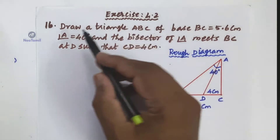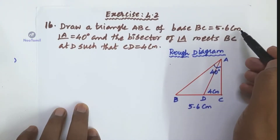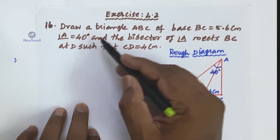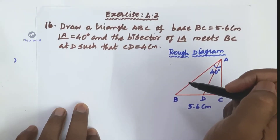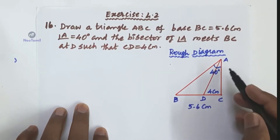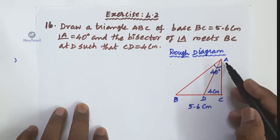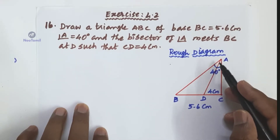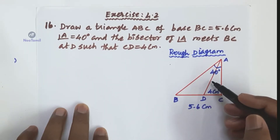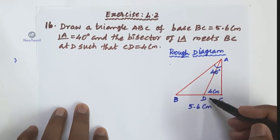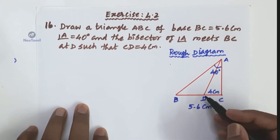Exercise 4.2, Question number 16: Draw a triangle ABC where base BC is equal to 5.6 cm, angle A is equal to 40 degrees, and the bisector of angle A meets BC at D such that CD is equal to 4 cm. In the rough diagram, triangle ABC has base BC of 5.6 cm, vertical angle A of 40 degrees, and the bisector of angle A meets the base at D, with CD equal to 4 cm.